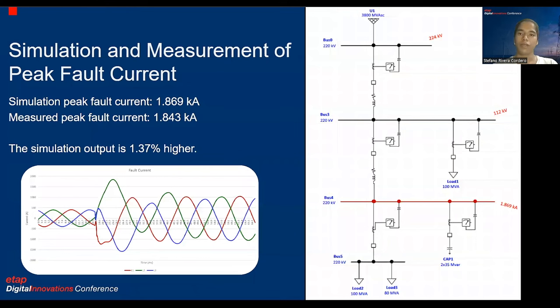Regarding the transients of the fault, the simulation showed a peak current of 1.869 kiloamps, while the measures carried out showed that the highest peak current value reached experimentally is 1.843 kiloamps. This means that in this parameter, the simulation deviates by 1.37% from the real value.